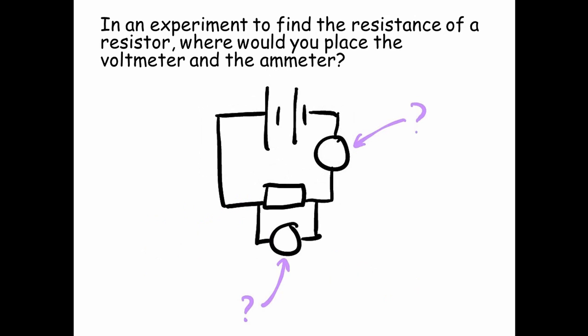In an experiment to find the resistance of a resistor, where would you place the voltmeter and the ammeter? The ammeter is placed in the series circuit. The voltmeter measures the voltage across the component, in this case the resistor.